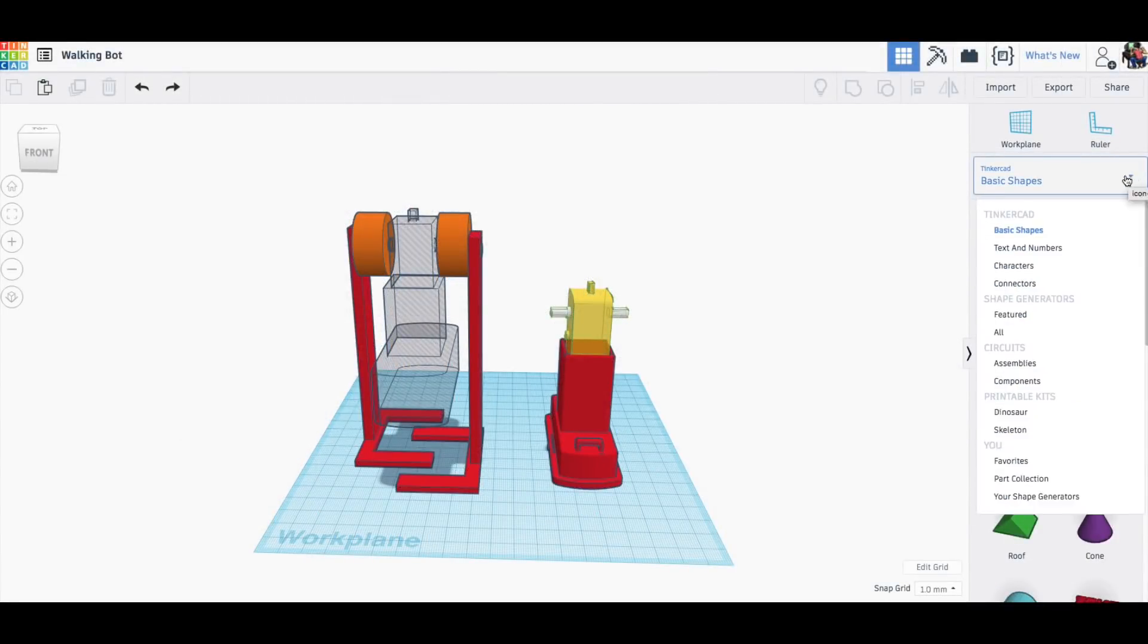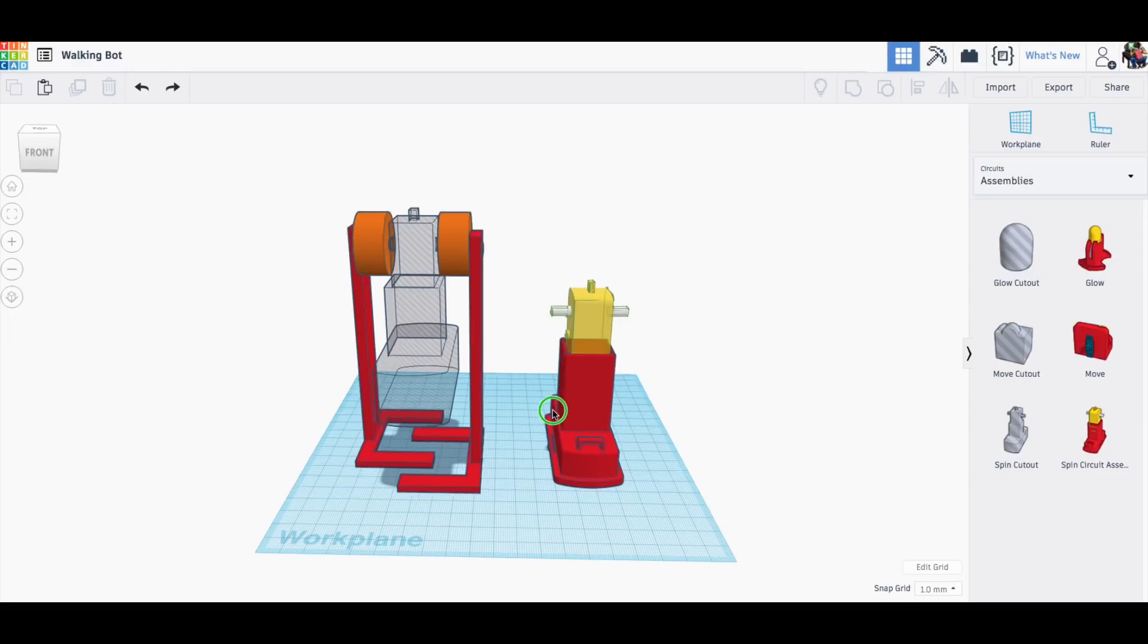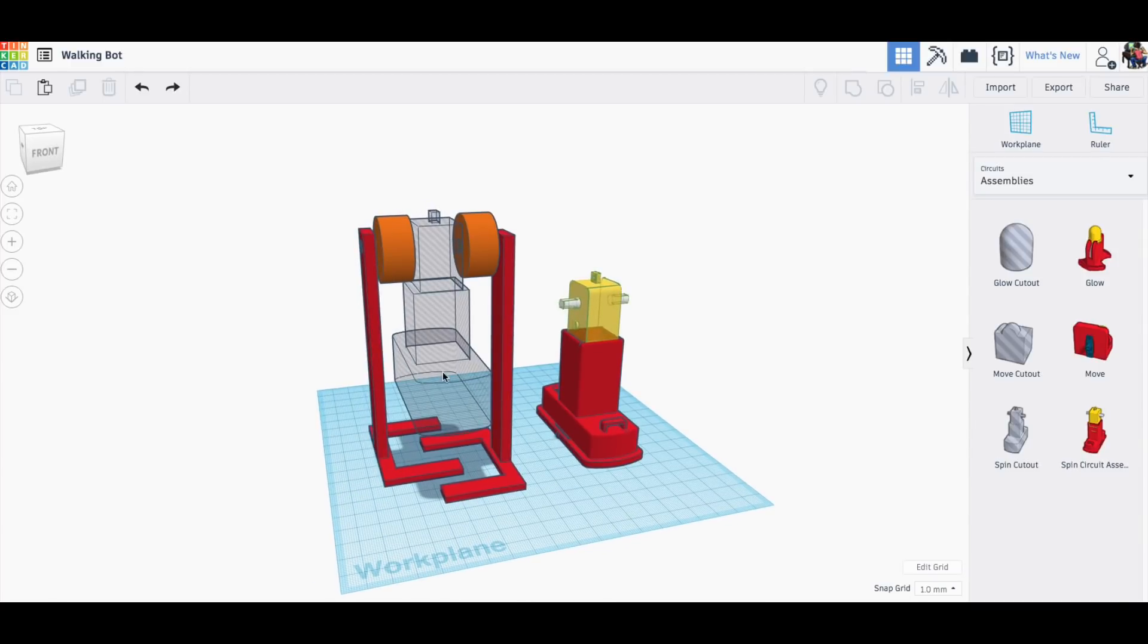This whole thing started when I was looking at the Tinkercad circuit assemblies. I did the LED one in a previous video and now I'm looking at this spin circuit. Tinkercad shows that you can make an animal with spinning arms but I saw it as a potential to make this walking robot.